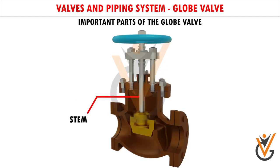Stem: It is also called the valve spindle and is connected at one end to the valve seat in a screw lift valve, and the other side has the wheel. It is threaded on the upper part.